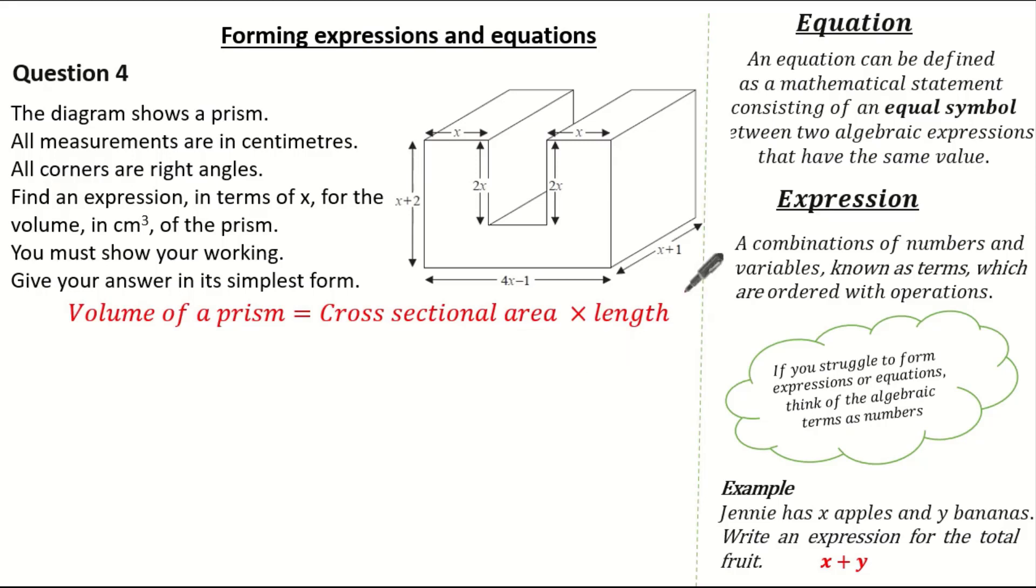So we need to work out the cross-sectional area first. To do this, let's split our shape up. Now I'm going to split my shape up into rectangles, and then I'll sum the area of those rectangles to give me the cross-sectional area. So, x bracket x plus 2 would be the area of this rectangle. x bracket x plus 2 would give me the area of this rectangle.